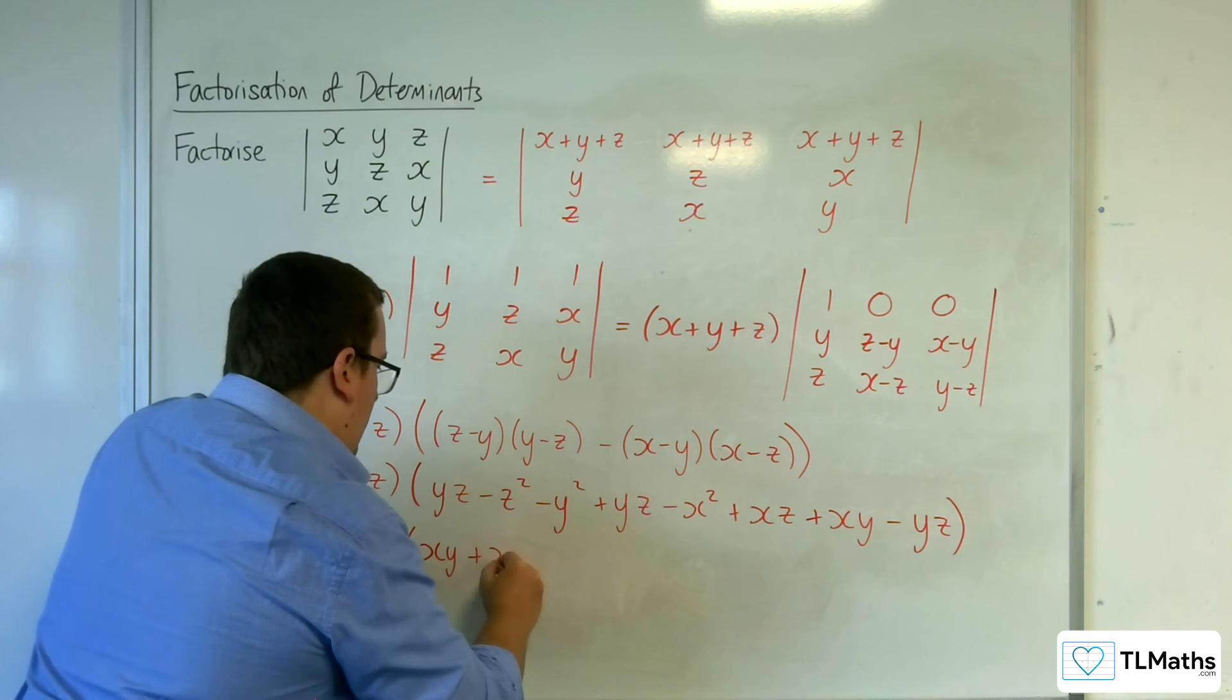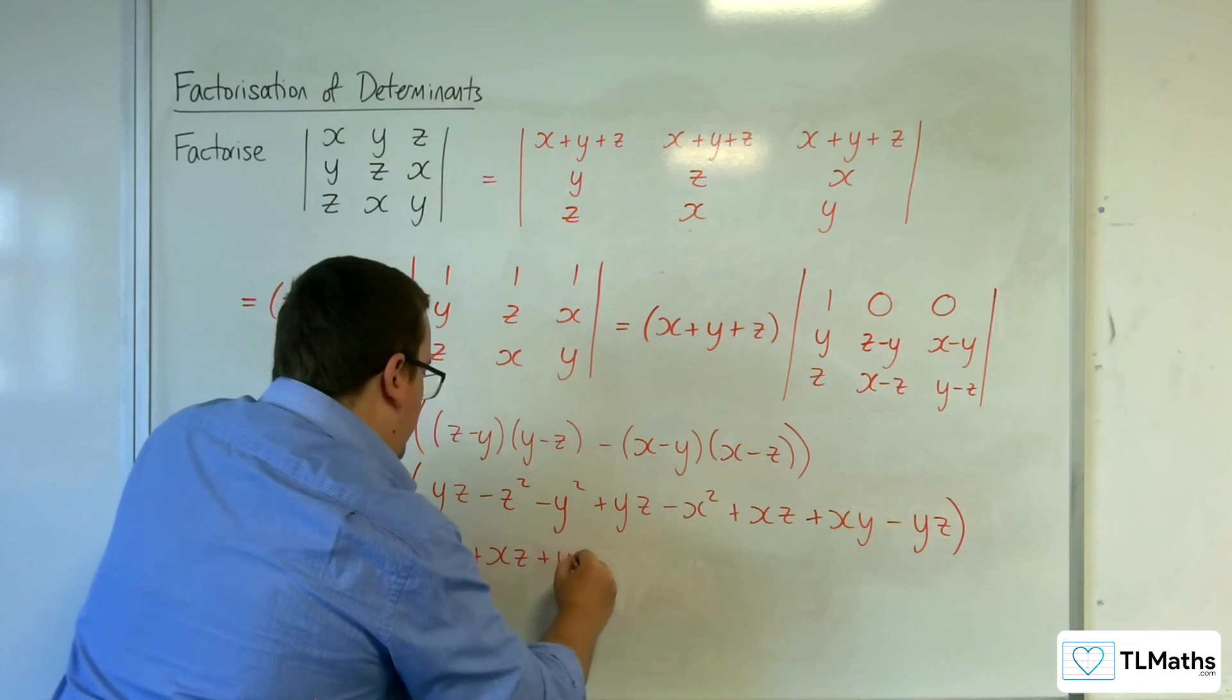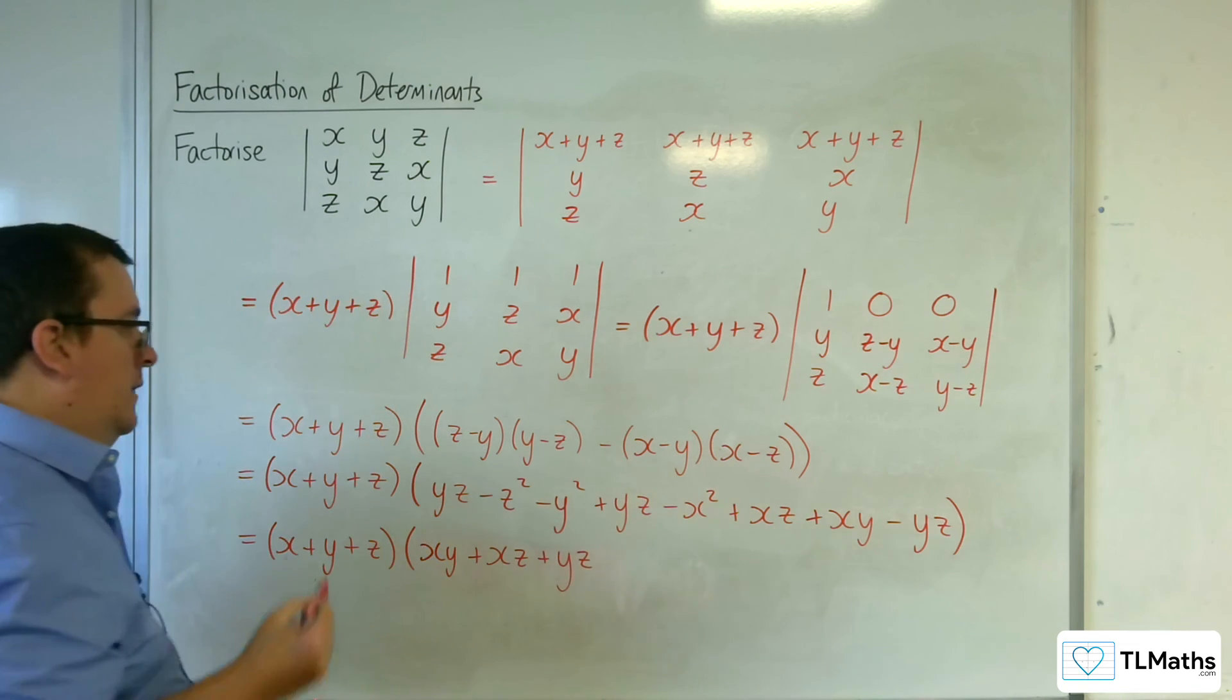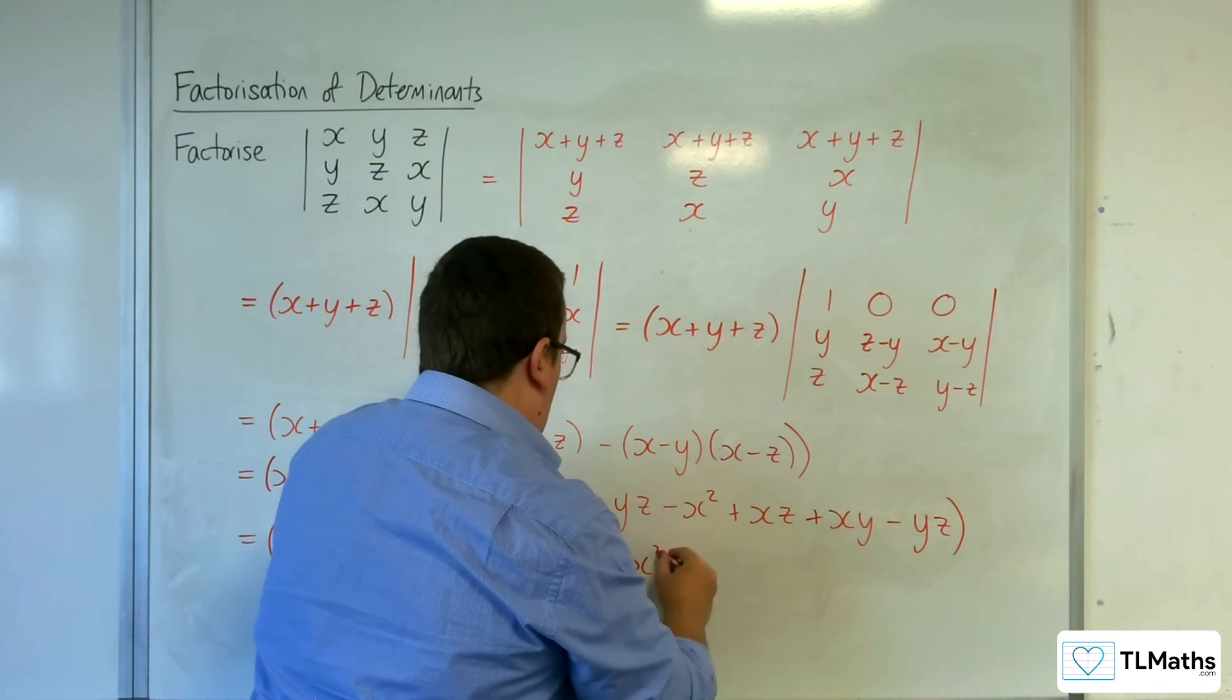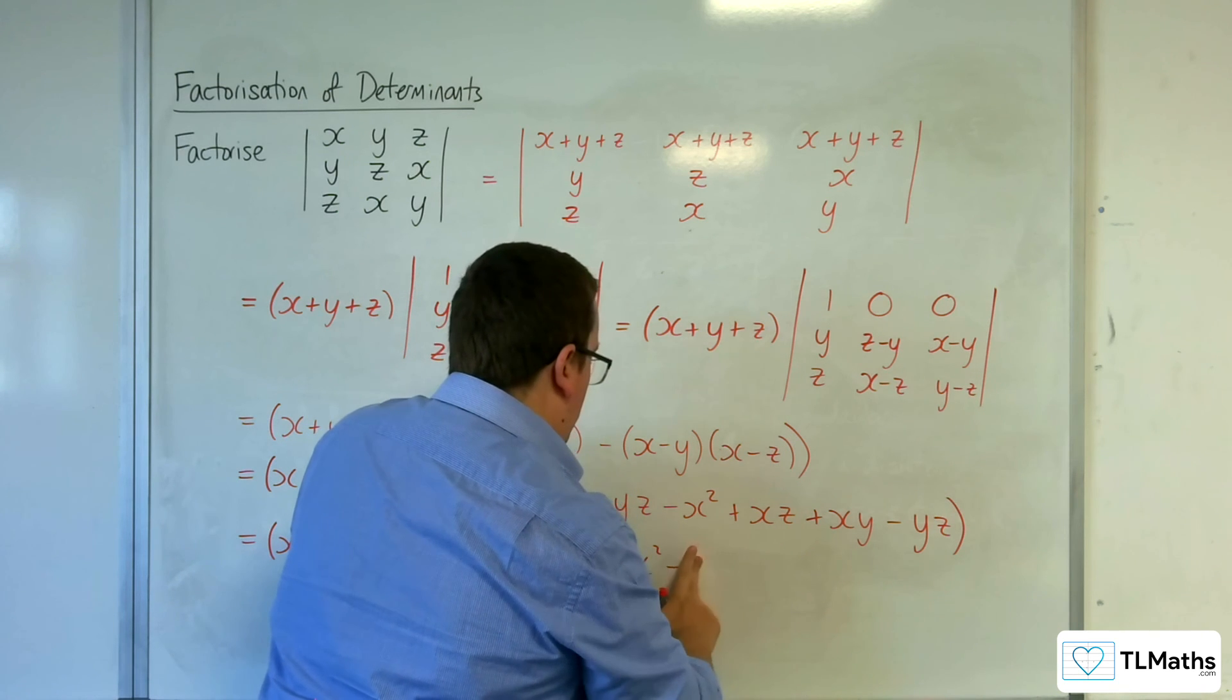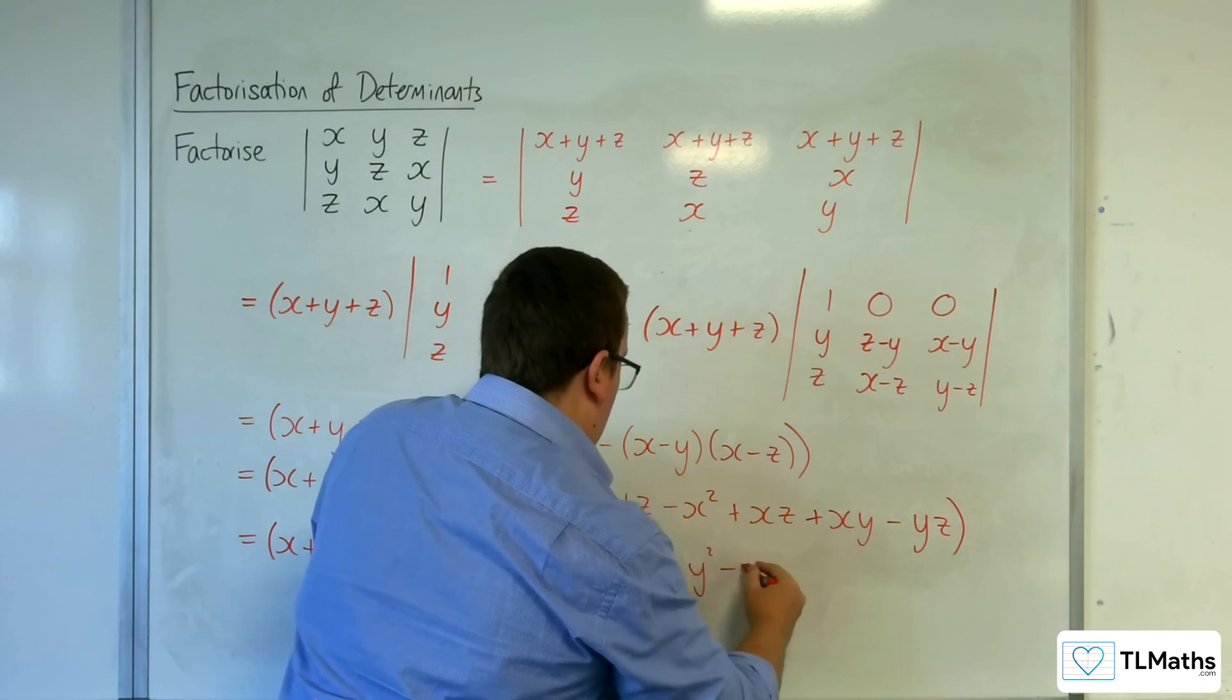So I've got an xy, an xz, and a yz take away x squared, take away y squared, take away z squared.